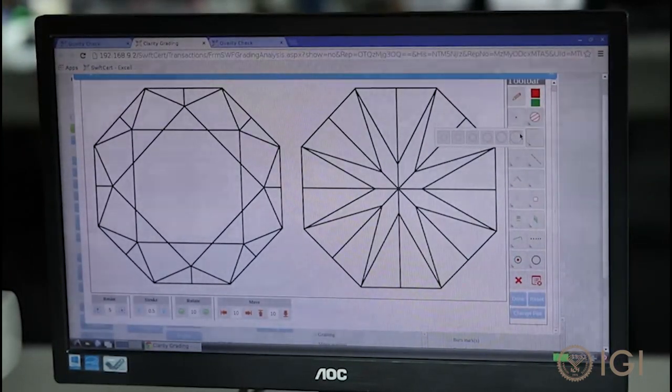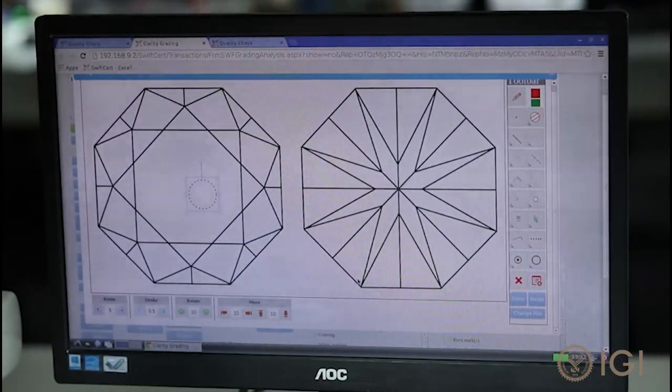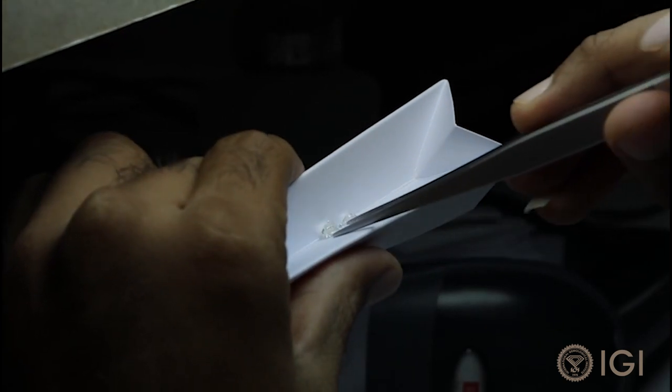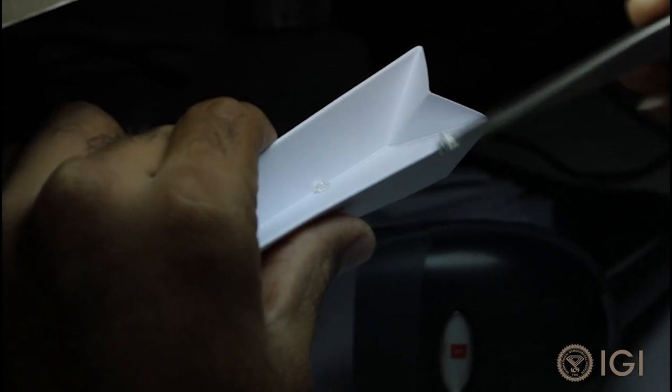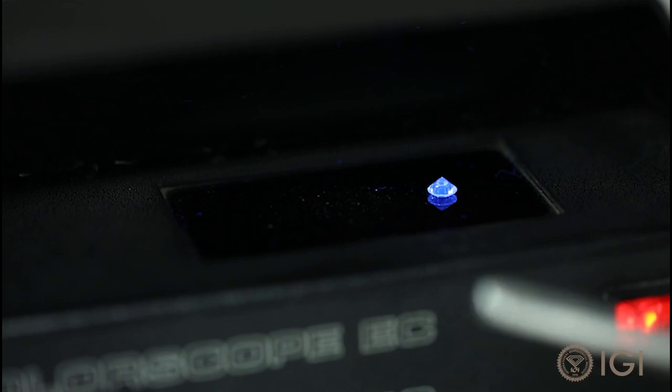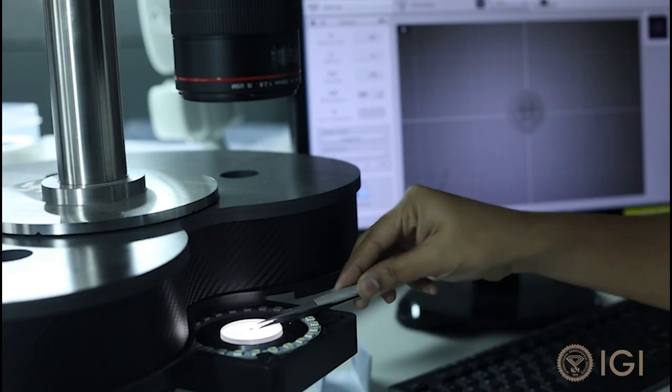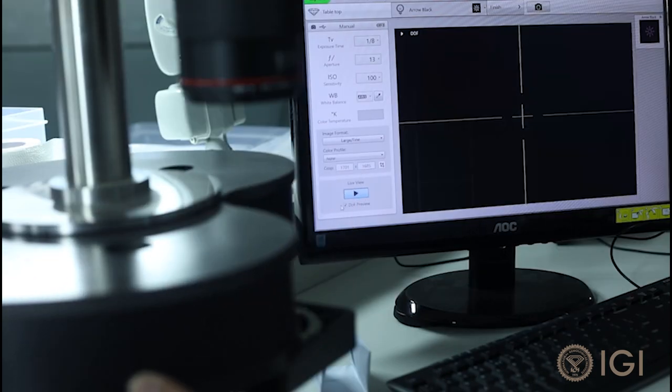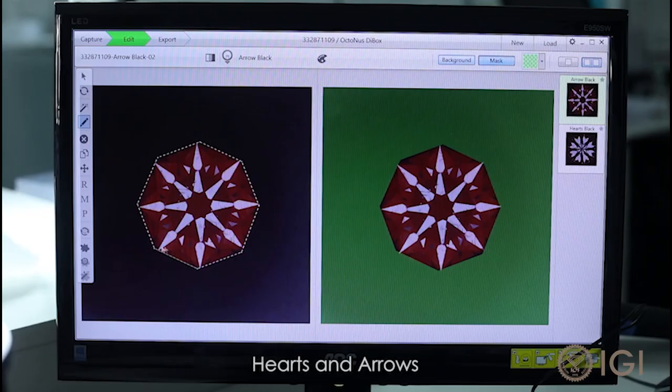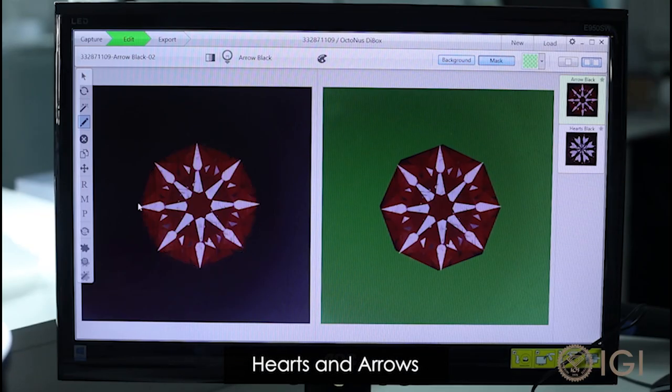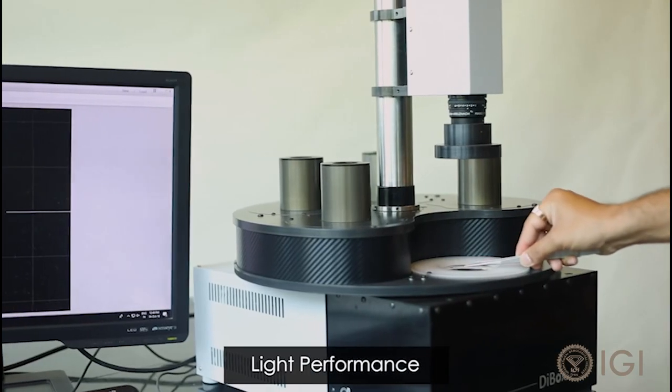Clarity grading assesses and maps the diamond's internal and external clarity characteristics. Color grading is performed with master stones and analysis under short and long wave UV to detect fluorescence or phosphorescence. For specialized cuts like hearts and arrows, IGI has structured light performance environments for technical analysis of optical precision and angular spectrum.